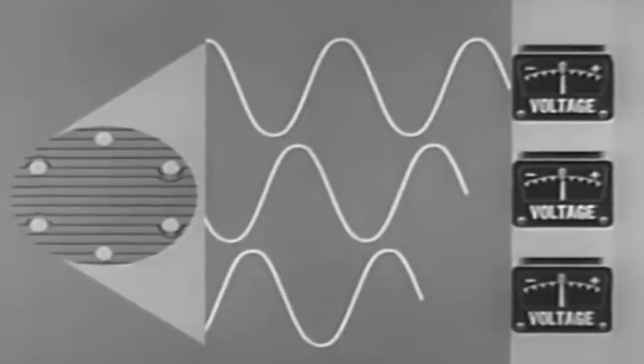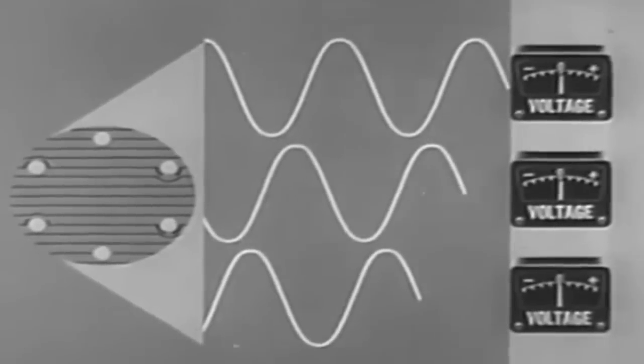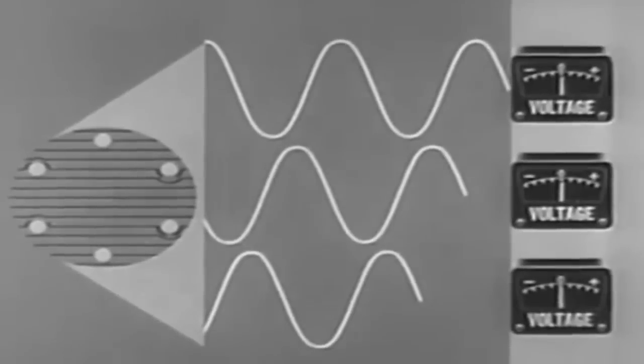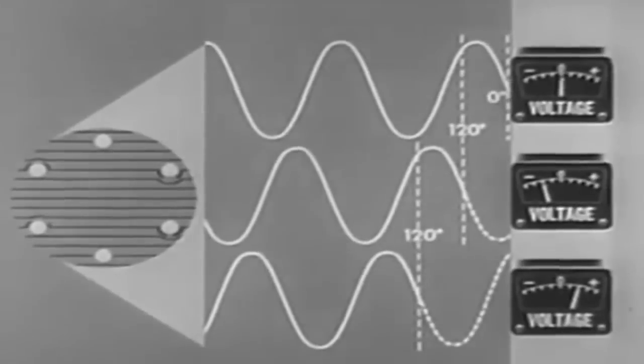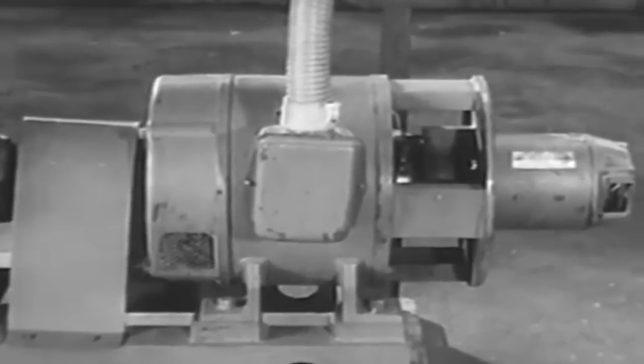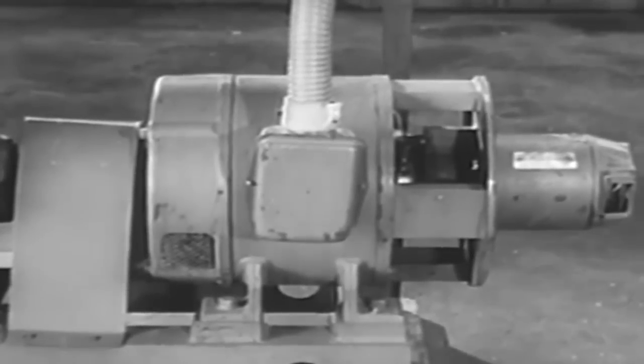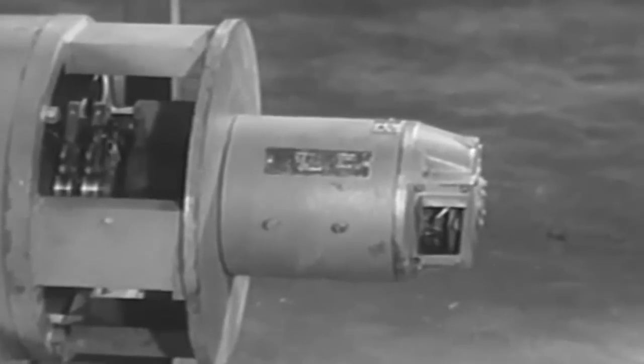The output of the three-phase generator, therefore, will be three AC voltages 120 degrees out of phase. The field of an AC generator is always excited by a DC voltage, in this case by a small DC generator in tandem.